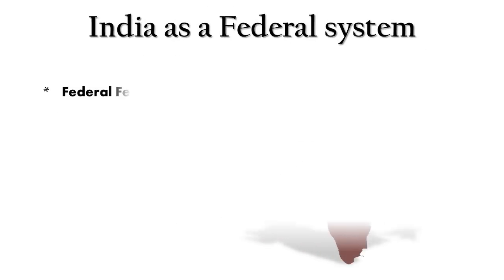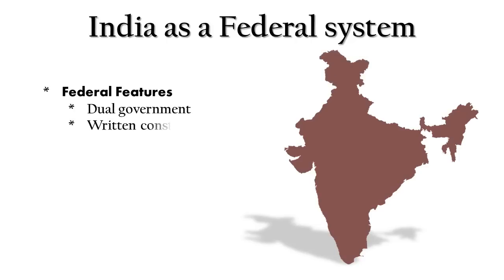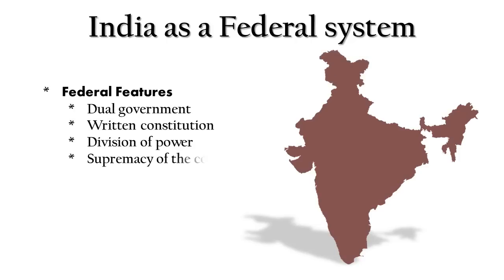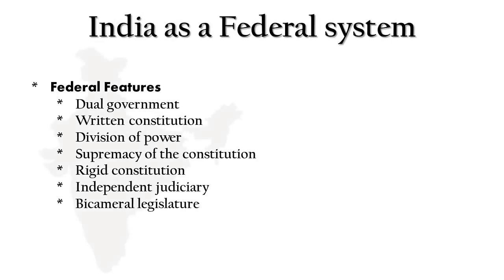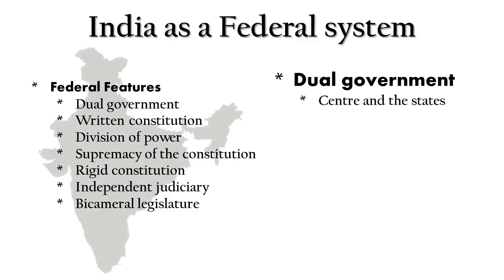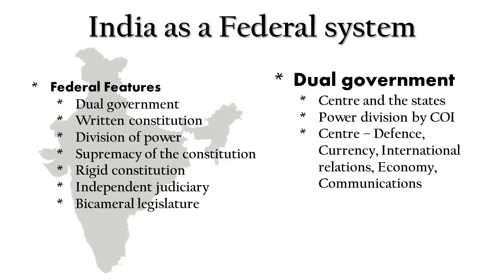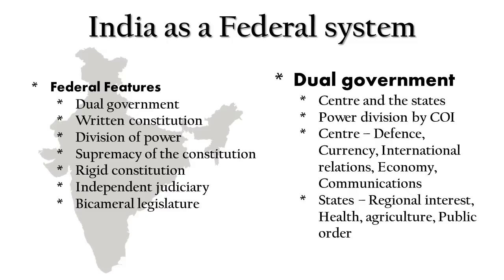The federal features that the Indian government satisfies are: dual government, written constitution, division of power, supremacy of the constitution, rigid constitution, independent judiciary, and bicameral legislature. India has a dual government — center and state. The constitution of India divides power between them: the central government takes care of matters like defense, currency, international relationships, economy, and communications, while state governments handle regional interest, health, agriculture, and public order.